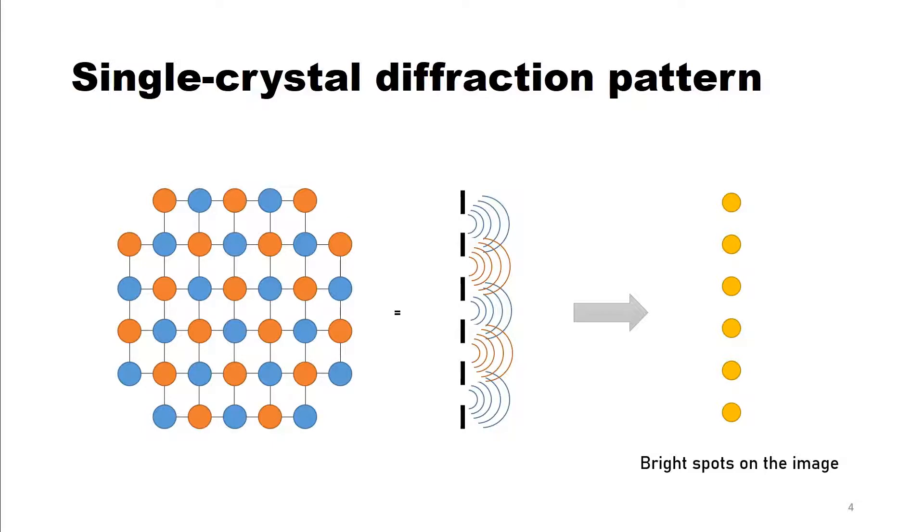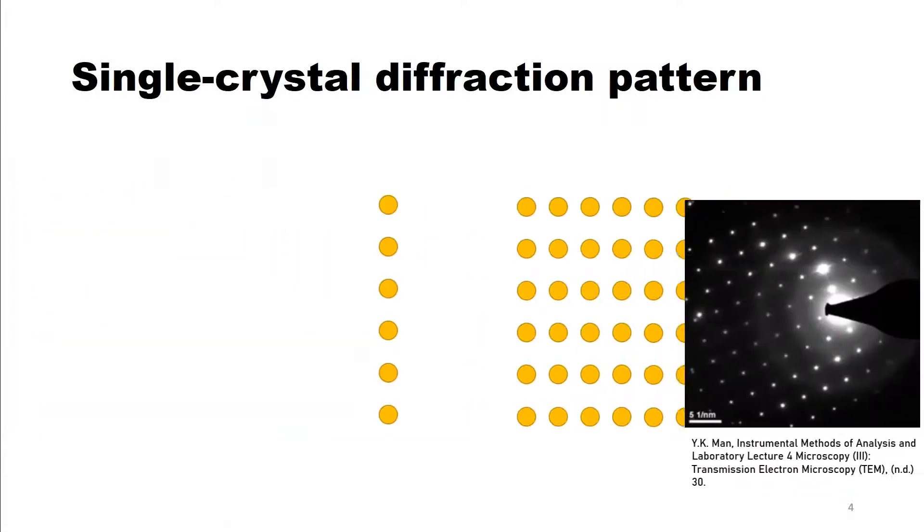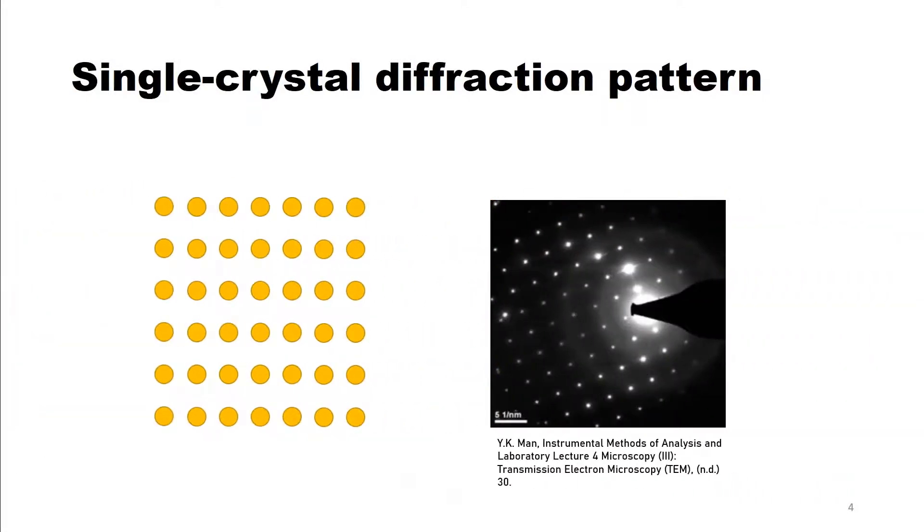All other points are extinguished by destructive interference. If you don't know why, watch the brush-up videos. Remember, a single crystal shows as multiple sharp points in our diffraction image.